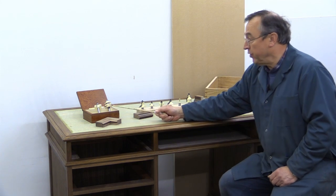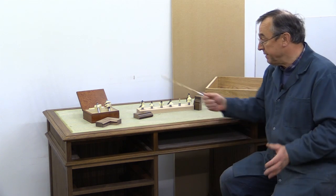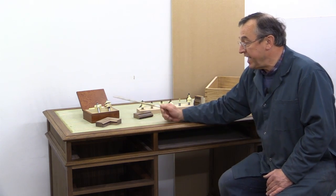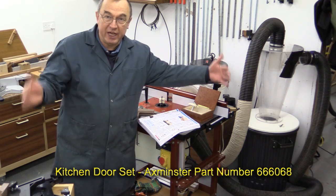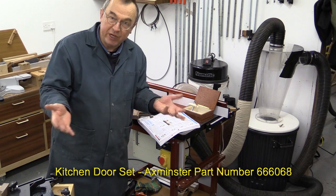On the end here, we've got a kitchen door set. All these come from Axminster, by the way. And this is product code 666-068. For the sides of the pedestals and also the outer sides of the top, I want to give the impression of raised panel work.